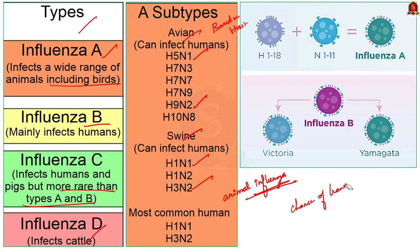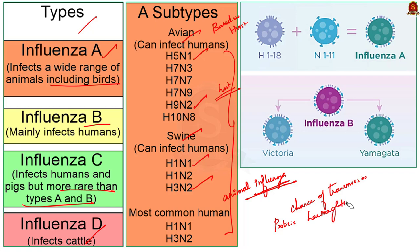There are also subtypes of influenza virus A based on the two proteins on the virus's surface. One is hemagglutinin, denoted by H, and the other is neuraminidase, denoted by N. On the whole, there are 18 different hemagglutinin subtypes and 11 different neuraminidase subtypes, ranging from H1 through H18 and N1 through N11 respectively, occurring in a number of different combinations.